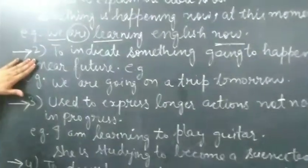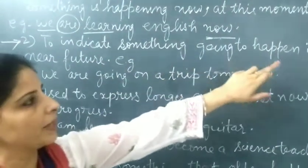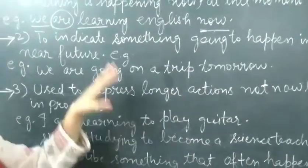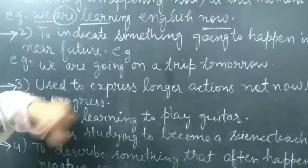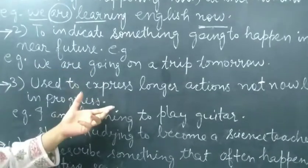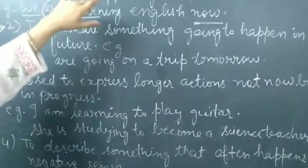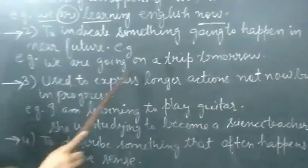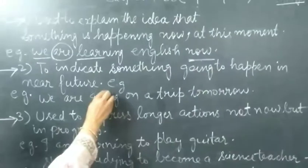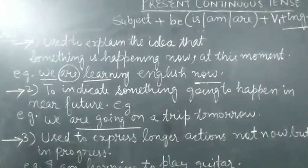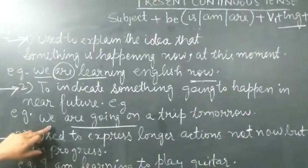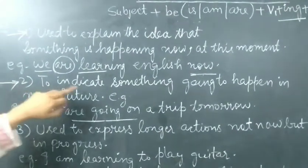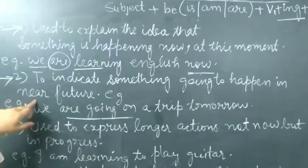Then, second use, to indicate something going to happen in near future. Jab bhi koi action aane wale samay mein hone wala hai, usko bhi hum most of the times, present continuous tense se bhi represent kar sakte hain. Then, hum usko future tense se bhi represent kar sakte hain. But, we can also represent that sentence with the help of present continuous tense. For example, here, we are going on a trip tomorrow. Abhi hum gaye nahi hai, humne jana hai kal. We can also say, we will go on a trip tomorrow. But, we can also write it as, we are going on a trip tomorrow. To, yeh konsa use ho gaya hamara? Indicate something going to happen in near future.